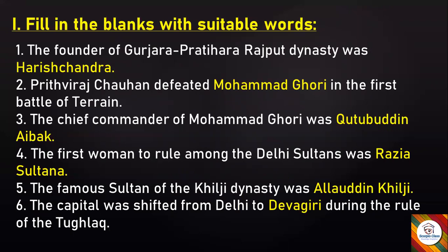The chief commander of Muhammad Gori was — Qutbuddin Aibak. The first woman to rule among the Delhi Sultans was — Razia Sultana. The famous sultan of the Khilji dynasty was — Alauddin Khilji. The capital was shifted from Delhi to — Devagiri, during the rule of the Tughlaqs. So these are the fill in the blanks with answers.